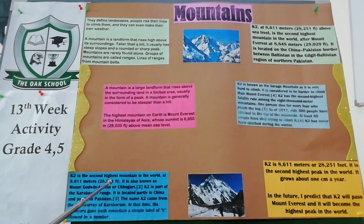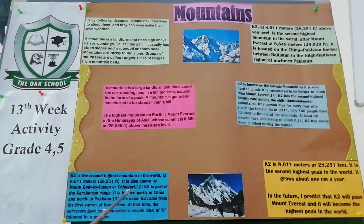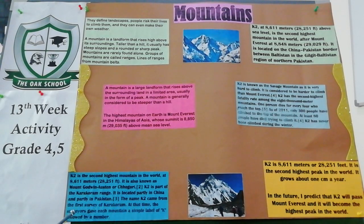K2 is 8,611 meters, 28,251 feet above sea level. It is also known by other names. K2 is a part of the Karakoram range. It is located partly in China. The first survey of the Karakoram used 'K' followed by a number — we recorded this as the numbering of Karakoram peaks.